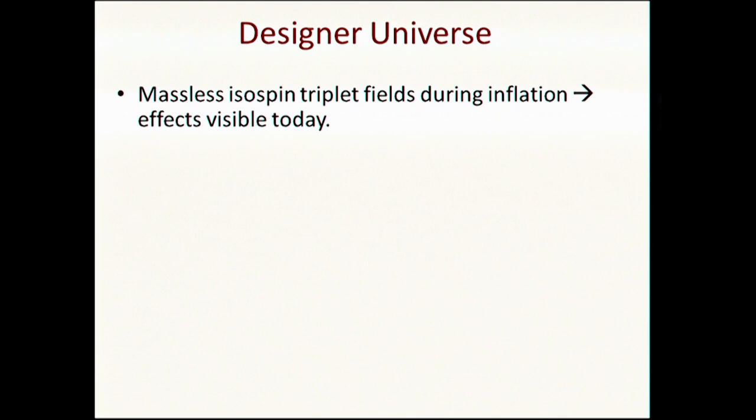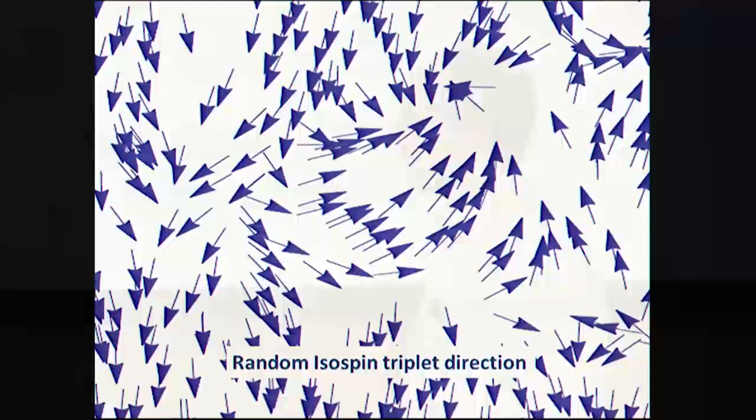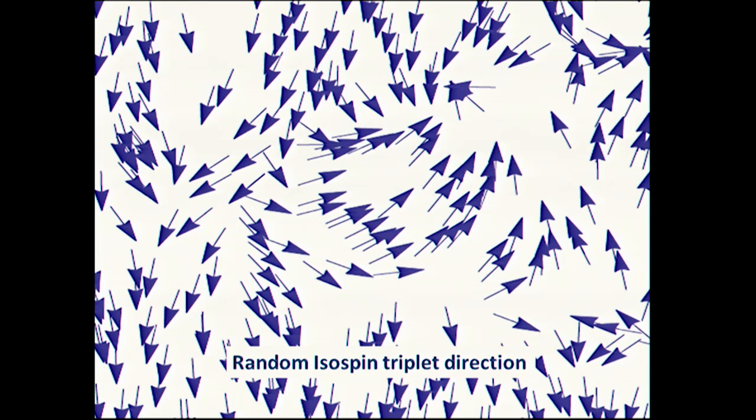The idea is imagine a universe where besides having the inflaton, we have three other massless fields that form an isospin triplet. The isospin is an internal SO(3) symmetry during inflation in such a way that this field exists during the early universe and survives till today. It has some imprint, leaves some imprint in the distribution of galaxies, that we could measure in principle today. If we looked at the universe in the skies, besides the usual picture we saw at the beginning, we would also have, at each region in the sky, we'll assign an arrow, a direction that is the direction in which this isospin triplet field points.